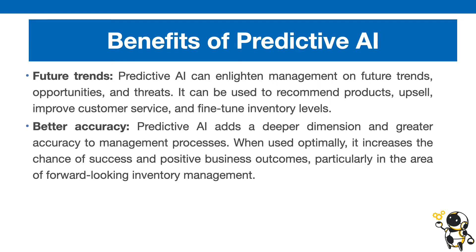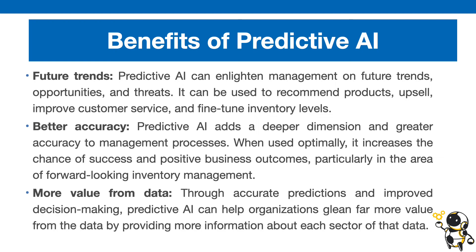Predictive AI can also allow you to have better accuracy. This AI adds a deeper dimension and greater accuracy to management processes without human emotion going into that data. Because AI is just following an algorithm repeatedly, it can give you the most unbiased view of what decisions need to be taken to achieve the maximum level of success. It also allows you to get more value out of data — computations that would take a data analyst days or weeks can now be done by AI in a minute or two, allowing you to make sense of data much quicker and improve decision making across many areas of the business.